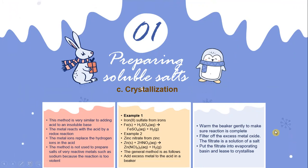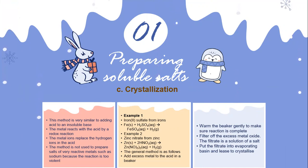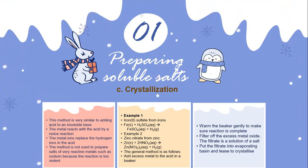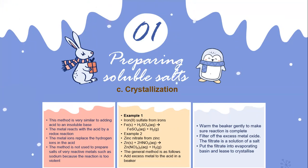Preparing soluble salts by crystallization — this method is very similar to adding acid to an insoluble base. The metal reacts with the acid by a redox reaction, and the metal ion replaces the hydrogen ion in the acid. Very reactive metals such as sodium are not used because the reaction is too violent.